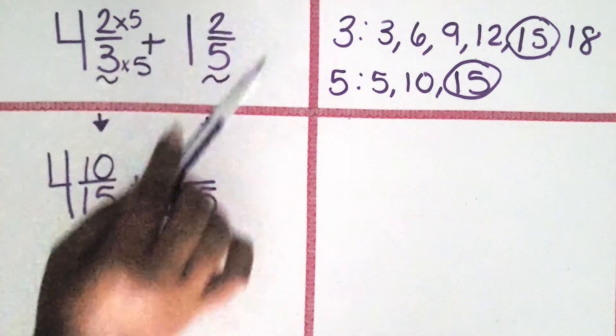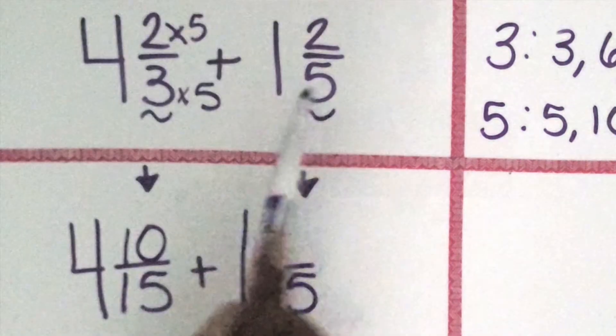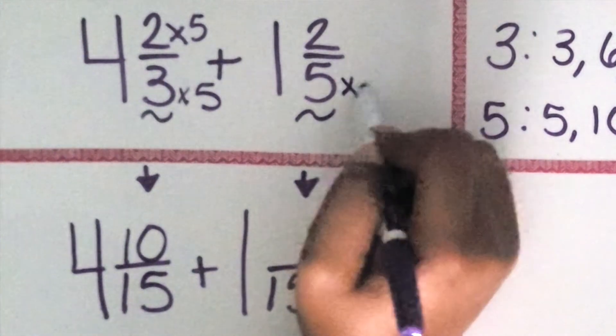Let's do work on 1 2/5 in the same way. How many groups of 5 are in 15? Or 5 times what number equals 15? Three.